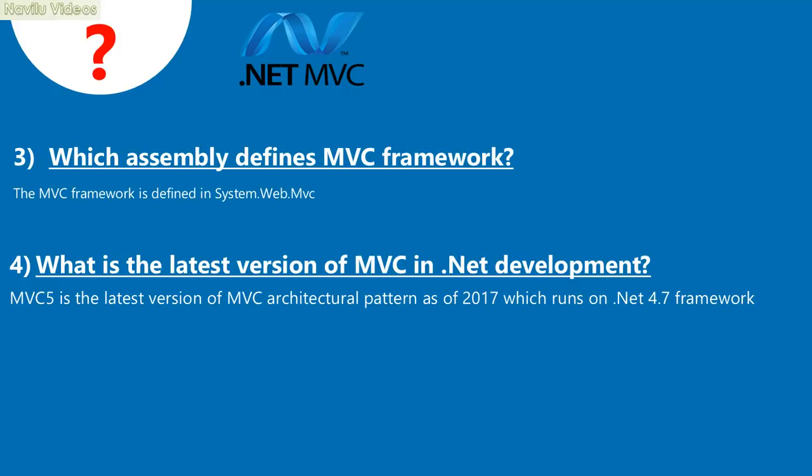Question 3: Which assembly defines the MVC framework? The MVC framework is defined in System.Web.MVC. Question 4: What is the latest version of MVC in .NET development? MVC 5 is the latest version of the MVC architectural pattern as of 2017, which runs on the .NET 4.7 framework.